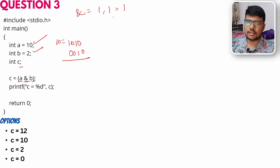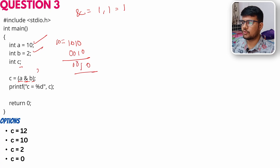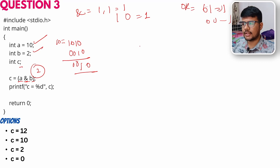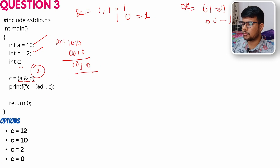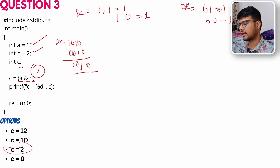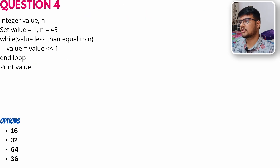In a bitwise AND, both bits must be 1 for the result to be 1; otherwise it's 0. Performing 1010 AND 0010 gives 0010, which is 2. So c = 2. Checking the options for question 3, c = 2 is correct.